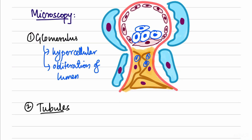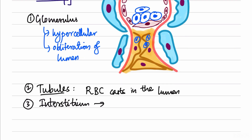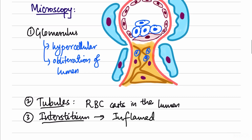In the renal tubules, because the capillary walls are damaged, RBCs enter the filtration unit, get filtered, and pass through the tubules, causing tubular damage and inflammation. RBCs and RBC casts are detected in the tubular lumen. The interstitium of the kidneys also becomes inflamed. The microscopic findings are: hypercellular glomerulus, obliteration of the lumen, RBC casts, and inflamed interstitium.